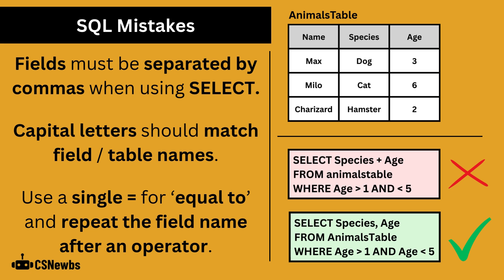Here are some common SQL mistakes that you want to avoid. Firstly, fields must be separated by commas when using SELECT. Secondly, you have to make sure that the capital letters match the field and table names shown. You also have to use a single equals for equal to, not a double equals like you would for selection in Python. Also, you must repeat the field name after an operator. For example, WHERE age is greater than 1 and less than 5 is not correct. It must be WHERE age is greater than 1 and age less than 5.